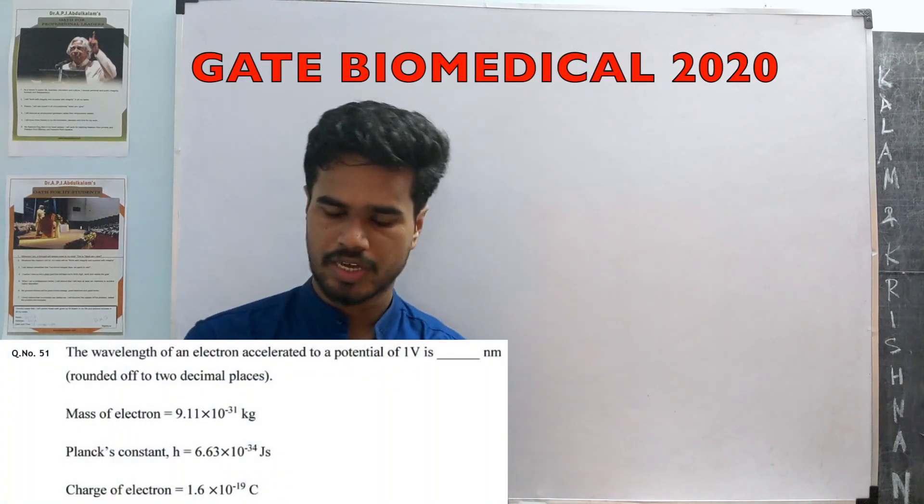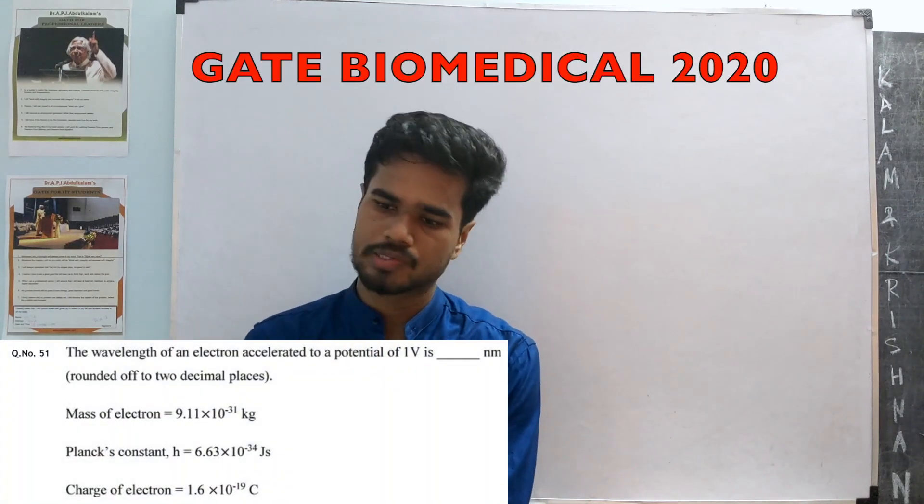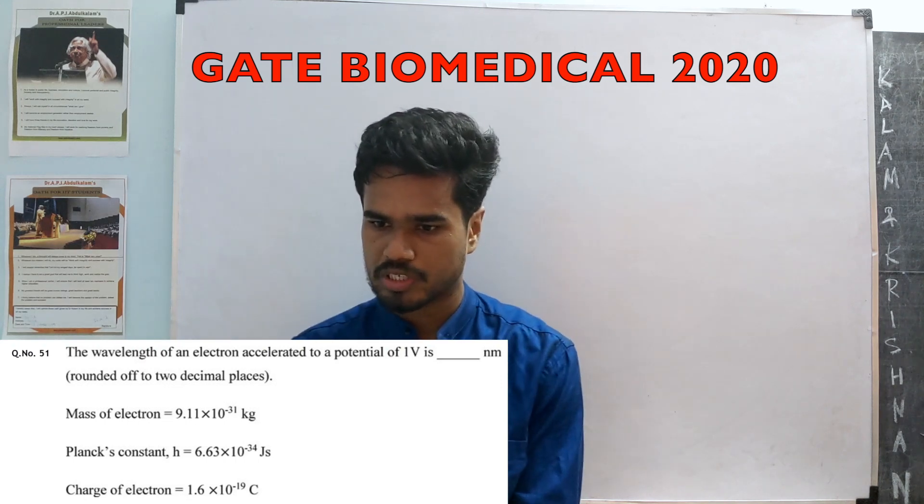51st question. The wavelength of an electron accelerated to a potential of 1 volt, dash nanometers, rounded off to two decimal places.